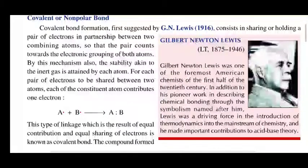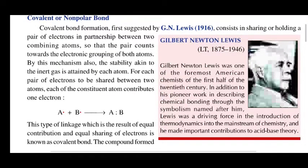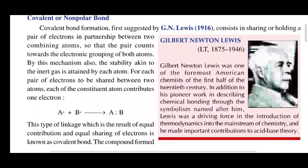Today we are going to study about a new topic: covalent bonds. A covalent bond is also known as a non-polar bond. Covalent bond formation was first suggested by G.N. Lewis, and it consists in sharing or holding a pair of electrons in partnership between two combining atoms, so that the pair counts toward the electronic configuration of both atoms.